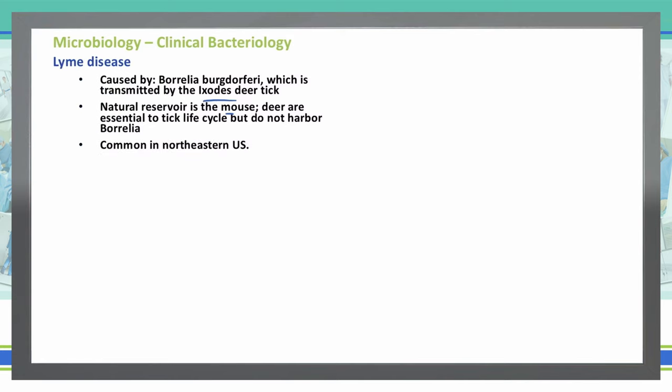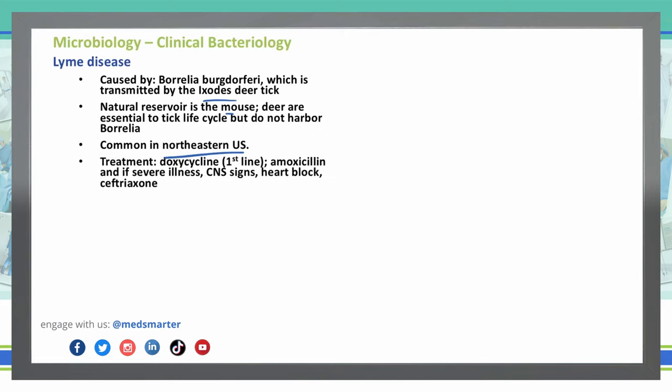Lyme disease is most commonly seen in the northeastern United States. To treat it, we use doxycycline as our first-line treatment — a very simple treatment. If it becomes more severe and we don't catch it early, we move to amoxicillin. If we see any CNS signs, severe illness, or heart blocks, we use ceftriaxone. Remember, ceftriaxone is a great cephalosporin for anything in the central nervous system because it will penetrate the blood-brain barrier.